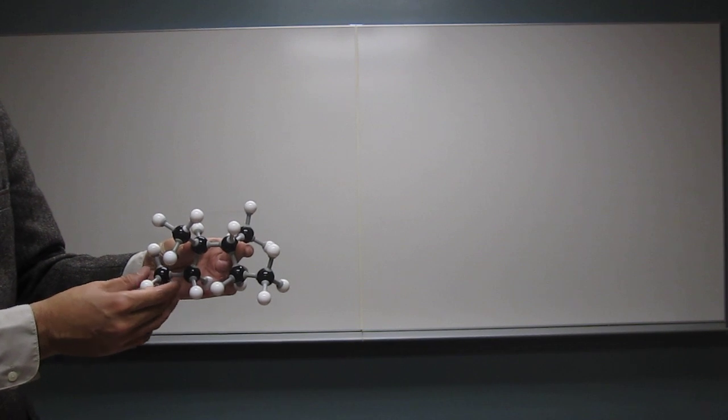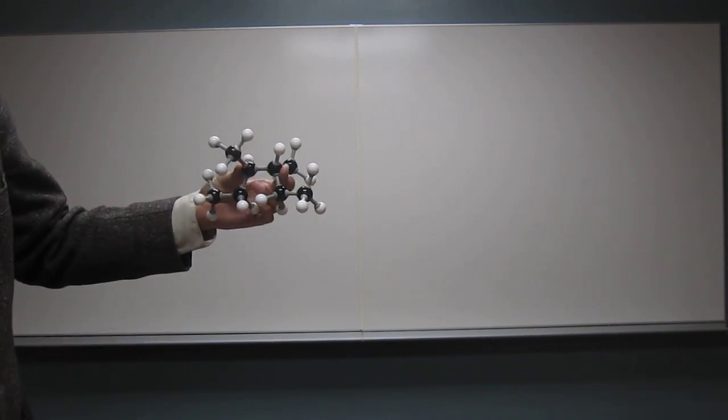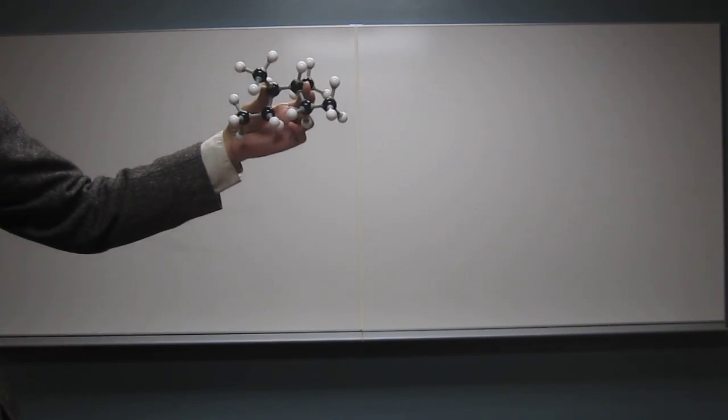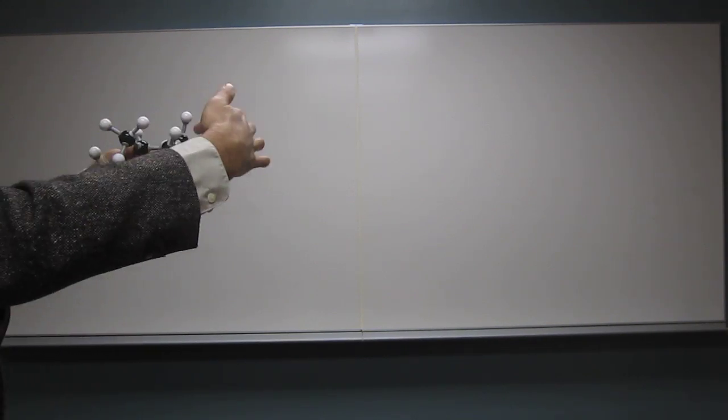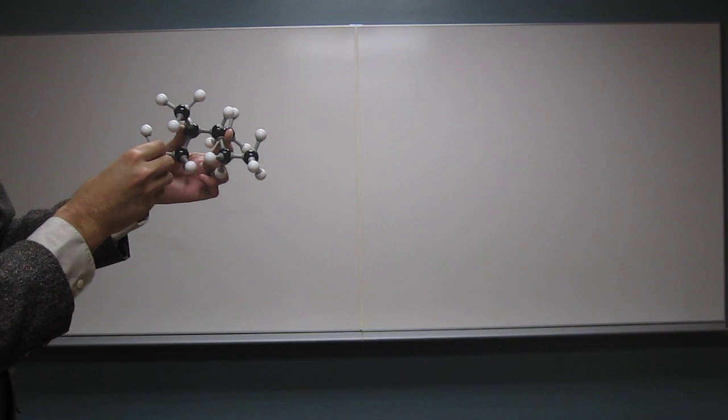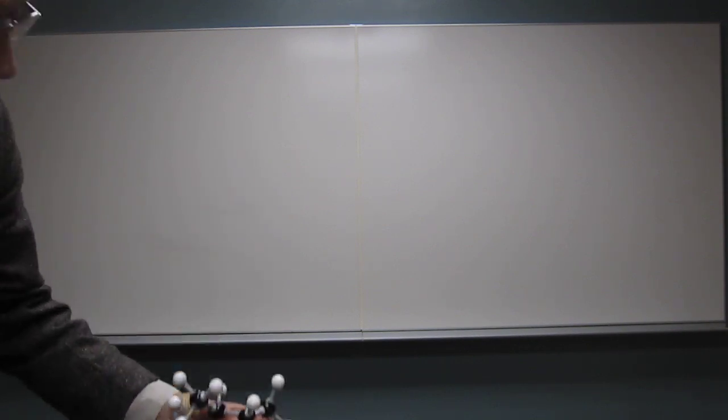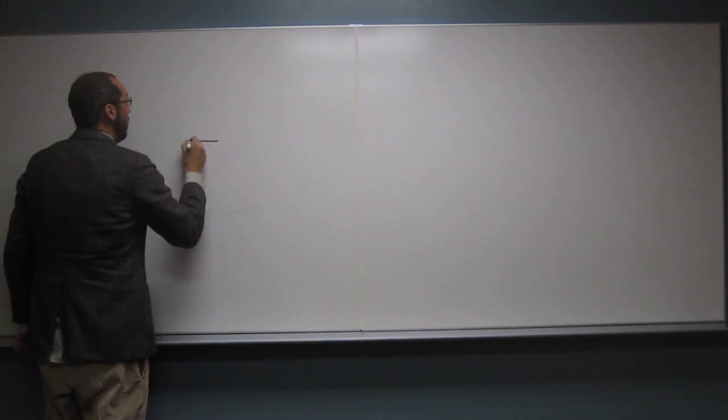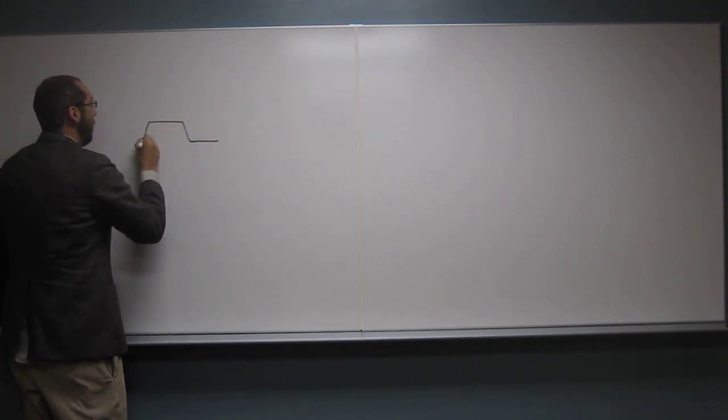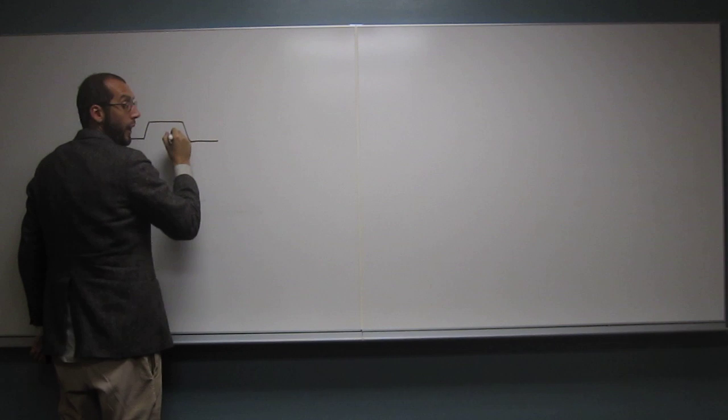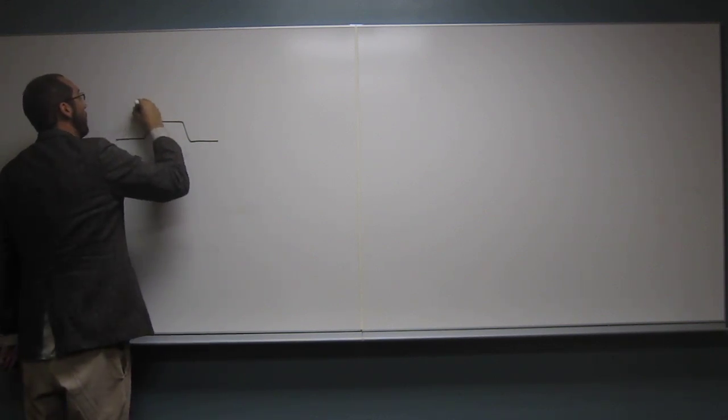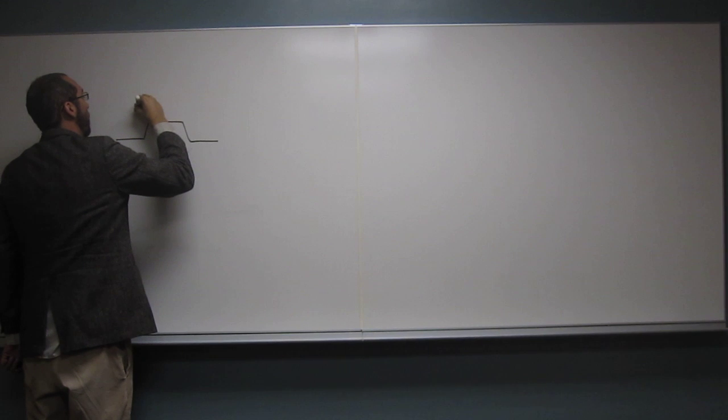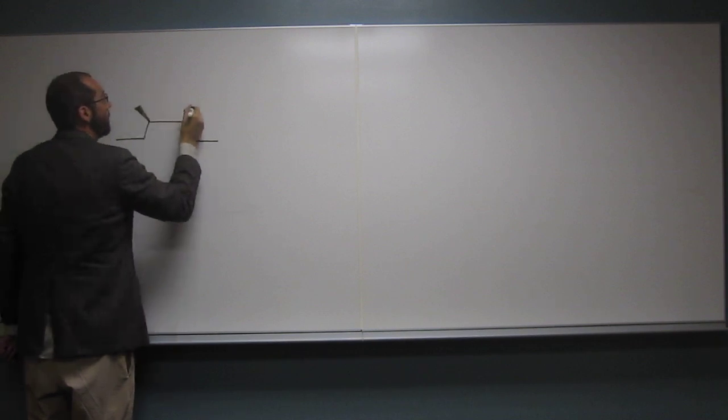And let's go ahead and just look at this molecule and we'll draw the structure up on the board. So we've got a methyl going back on the third carbon and a methyl coming forward on the fourth carbon, so let's draw that. So we're drawing it in perspective.